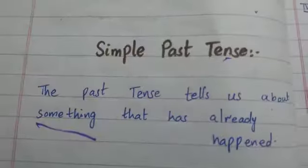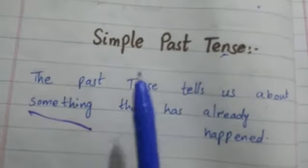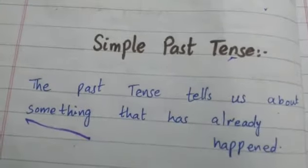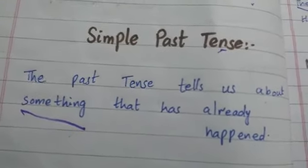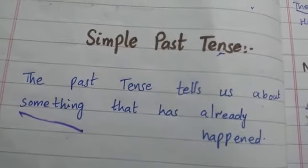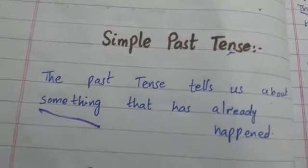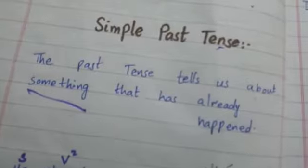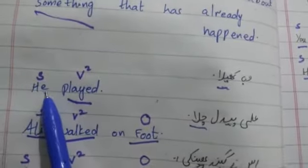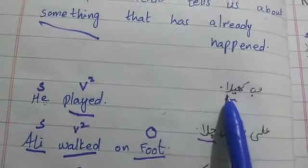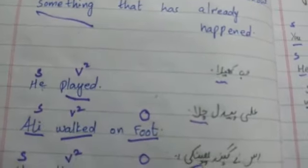Students, now we've revised simple past tense۔ ہم نے last structure میں simple past tense سیکھے ہوئے ہیں اور اب ہم ان کو revise کرتے ہیں۔ Past tense ایسے tense ہوتے ہیں جو ان چیزوں کے بارے میں بتاتے ہیں جو ہم گزرے ہوئے وقت میں کر چکے ہوتے ہیں۔ 'The past tense tells us about something that has already happened.' Past tense بنانے کا طریقہ: subject لکھنا ہوتا ہے اور verb کی second form۔ For example: 'He played' — وہ کھیلا۔ یہاں 'he' subject ہے اور verb کی second form use ہو رہی ہے۔ 'Ali walked on foot' — Ali subject ہے اور 'walked' verb کی second form ہے۔